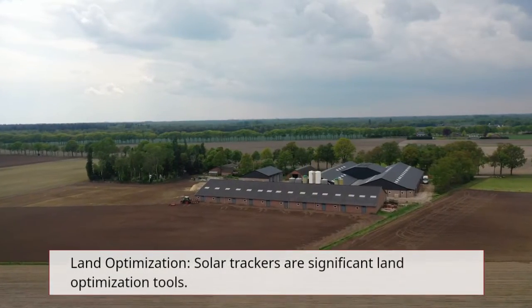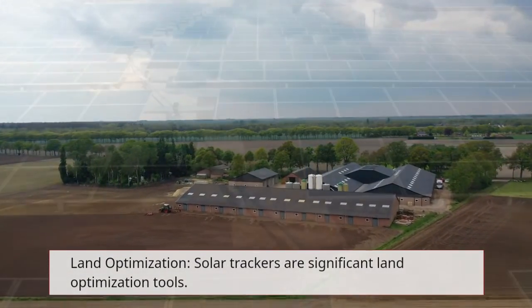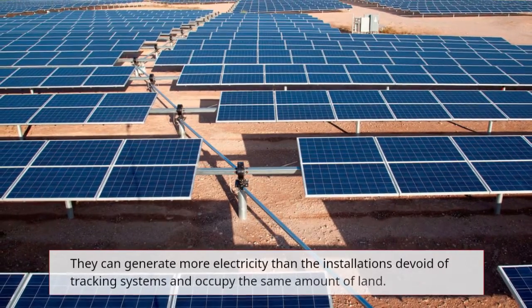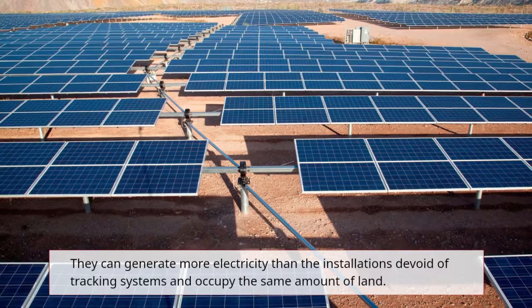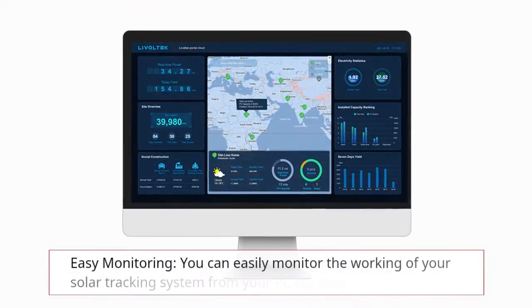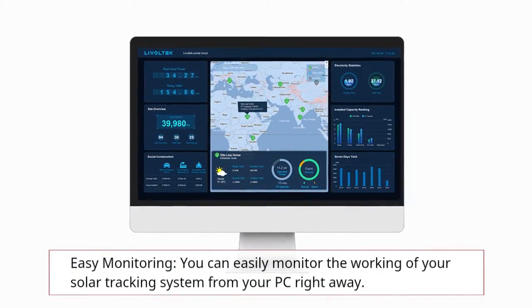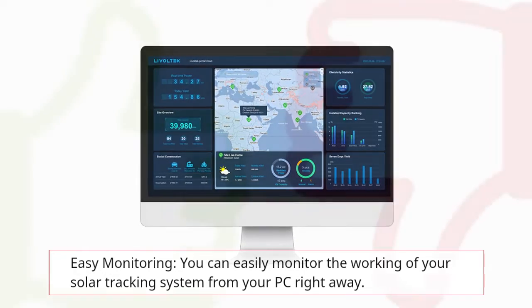Land optimization: Solar trackers are significant land optimization tools. They can generate more electricity than installations devoid of tracking systems and occupy the same amount of land. Easy monitoring: You can easily monitor the working of your solar tracking system from your PC right away.